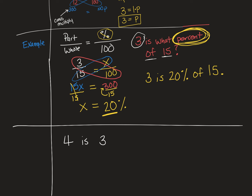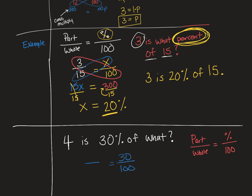The next question is: 4 is 30% of what? Let's write our formula — part over whole equals percent over 100. They give us the percentage, so we write 30 over 100 equals part over whole. Reading the question again: 4 is 30% of what — this implies that 4 is the part, and the whole is what you're going to find. So we plug in 4 for the part and use W for the missing whole number.